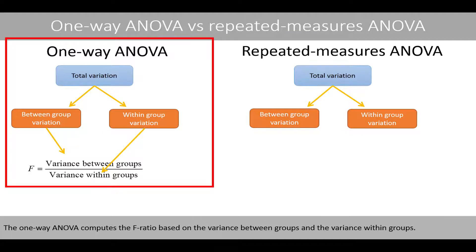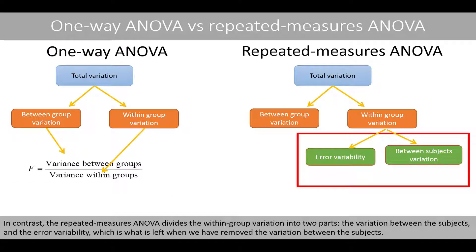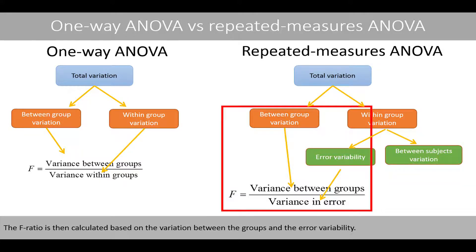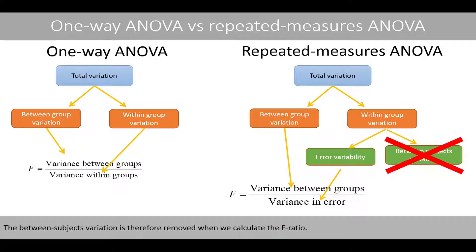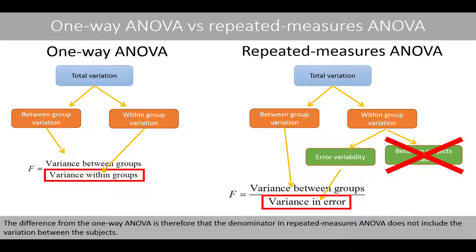The one-way ANOVA computes the F-ratio based on the variance between groups and the variance within groups. In contrast, the repeated measures ANOVA divides the within-group variation into two parts: the variation between the subjects and the error variability, which is what is left when we have removed the variation between the subjects. The F-ratio is then calculated based on the variation between the groups and the error variability, so the between-subjects variation is removed. The denominator in the repeated measures ANOVA does not include the variation between the subjects.